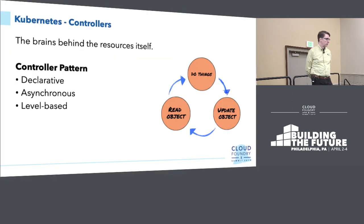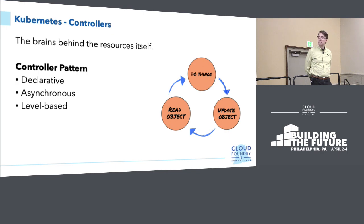Going back to the presentation: the controllers are the brain behind the resources. Controllers follow the pattern of: read an object, do some things, then update that object. The nice thing about controllers is that they are declarative — as an end user or operator of the cluster, you define how you want that resource to look. You can apply a kubectl apply on a file where you define the whole object, and every time that object changes, the controller is going to reconcile the desired state.